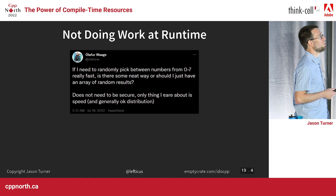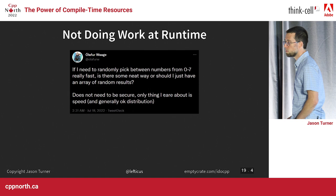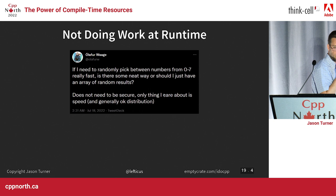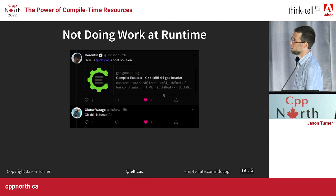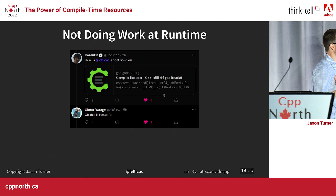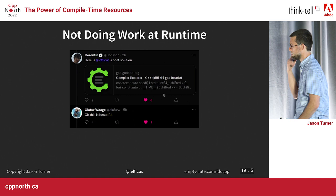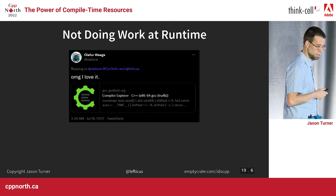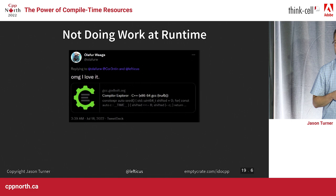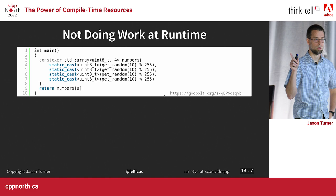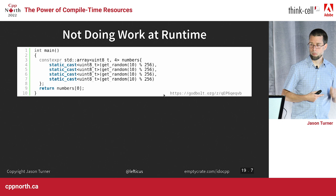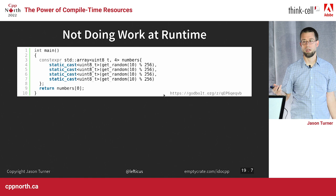On the topic of not doing work at runtime — Ollie this morning at 2:31 a.m. said: if I need to randomly pick between numbers from zero to seven really fast, is there any neat way or should I just have an array of random results? Quarantine — that's me, I am Lefticus — said check out Lefticus's neat solution. It came from a C++ Weekly episode seven years ago. The solution: he creates a constexpr array of random numbers seeded with __TIME__, so it gets a different result each build. All he cares about is a pseudo-random list of numbers — lets the compiler do it, gets the results at runtime.